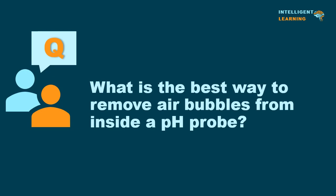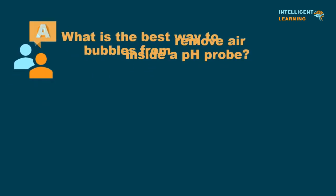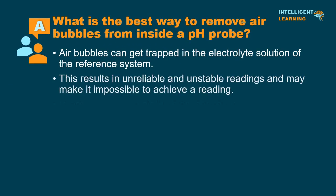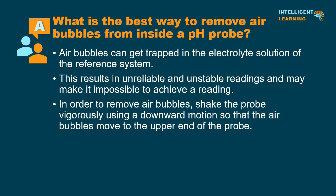What is the best way to remove air bubbles from inside a pH probe? Air bubbles can get trapped in the electrolyte solution of the reference system, resulting in unreliable and unstable readings and may make it impossible to achieve a reading. In order to remove air bubbles, shake the probe vigorously using a downward motion so that the air bubbles move to the upper end of the probe.